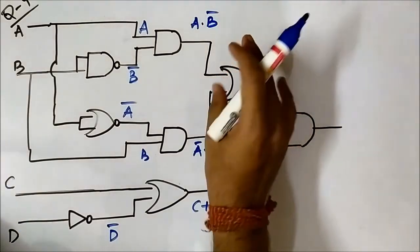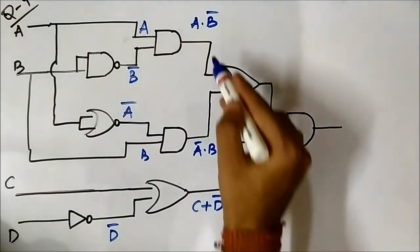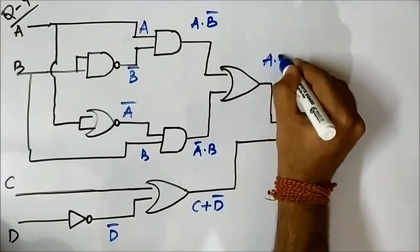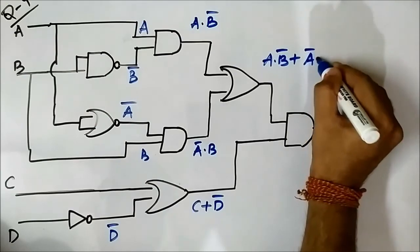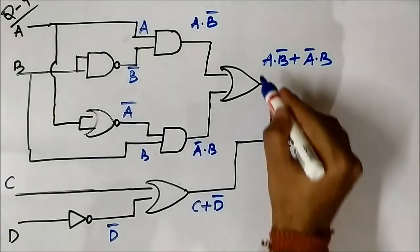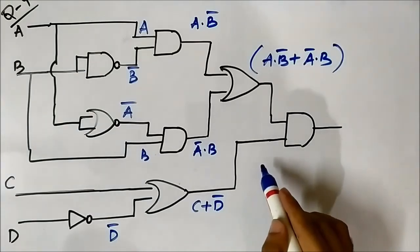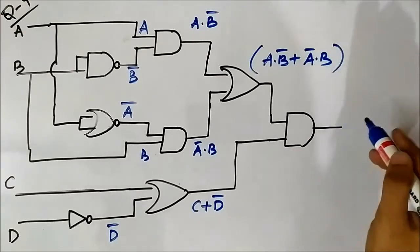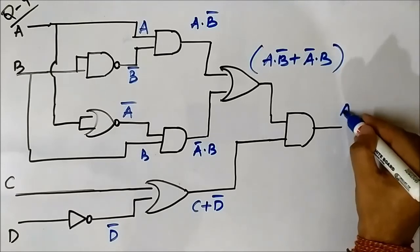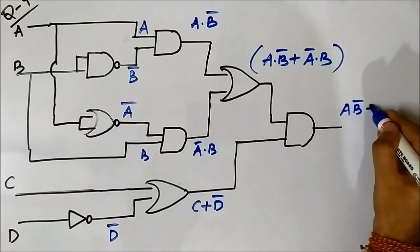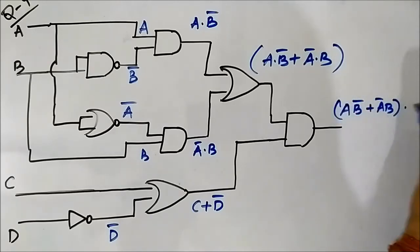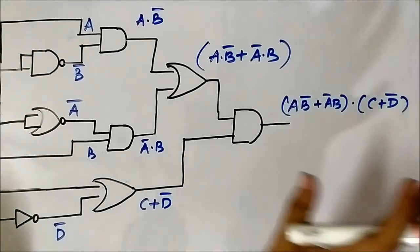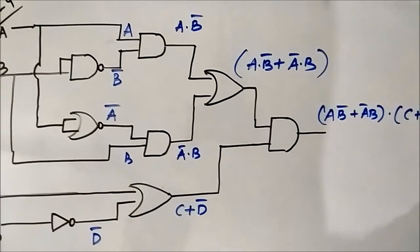The third layer has only one OR gate with inputs A·B complement and A complement·B, so the output is A·B complement OR A complement·B. The fourth and final layer is the AND gate, with inputs (A·B complement OR A complement·B) and (C OR D complement), so the final output is (A·B complement OR A complement·B)·(C OR D complement).